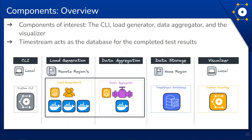The Constellation cloud architecture includes a home region and some number of remote regions. Each piece of Constellation's architecture is made up of multiple components that make testing possible — the CLI, load generator, data aggregator, and visualizer. Every test will start with some sort of user input, so we'll start by taking a look at the CLI.